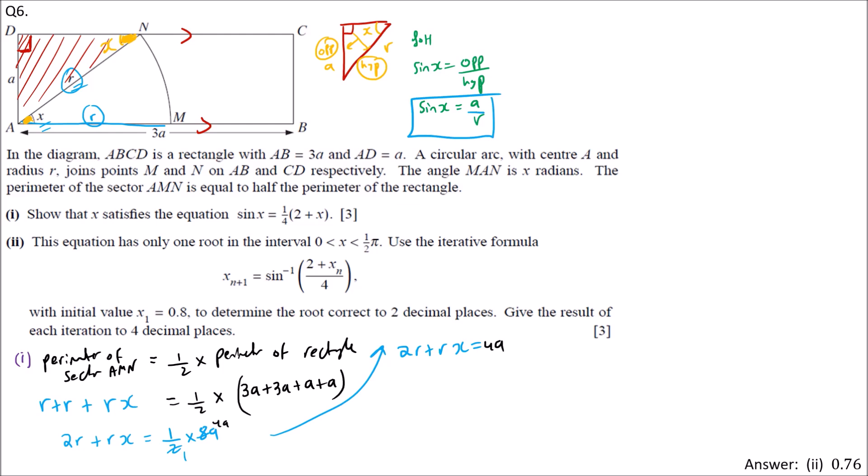Recall sin of X. If we factorize R: 2 plus X equals 4A. So 2 plus X equals 4A over R.